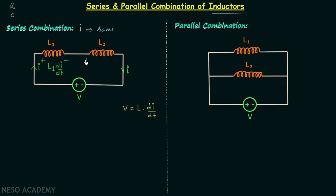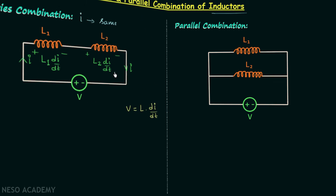The voltage across the first inductor will be equal to L1 multiplied by the time rate of change of current, that is di by dt. For the second inductor, the voltage across it will be equal to L2 multiplied by di by dt.